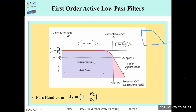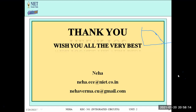The frequency response plot shows a pass band and a stop band. For the passive low pass filter, the pass band gain was 1, but for the active low pass filter the pass band gain is (1 + R2/R1), because the op-amp increases the gain by the R2/R1 ratio. If you have any questions, post them in the comment box. In the next lecture we will discuss the second order low pass filter.